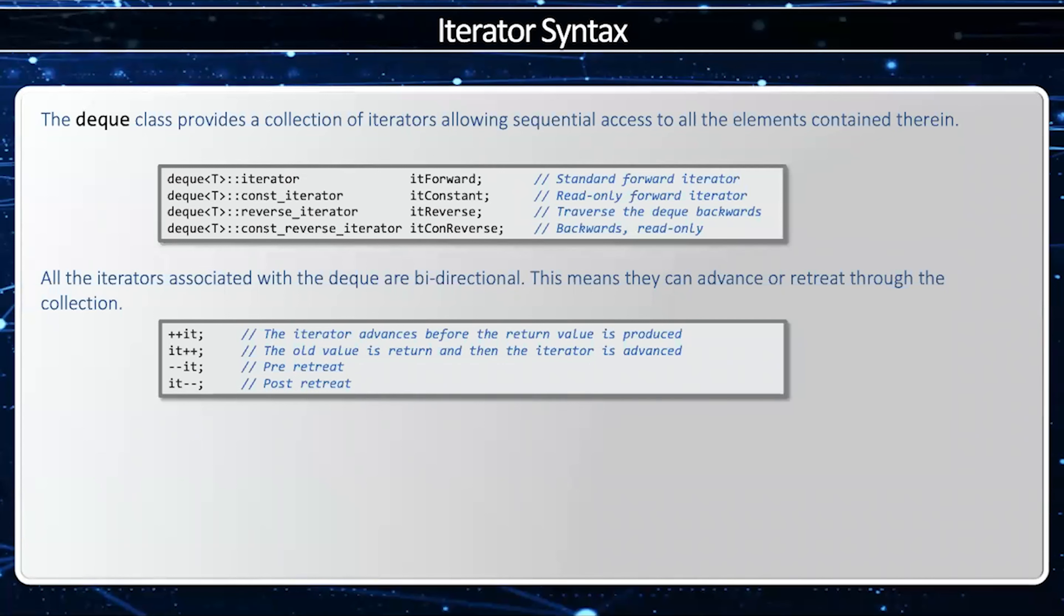As a reminder of how the iterator is declared in the deck, there are actually four iterators: the forward iterator, the constant iterator, the reverse iterator, and the constant reverse iterator.